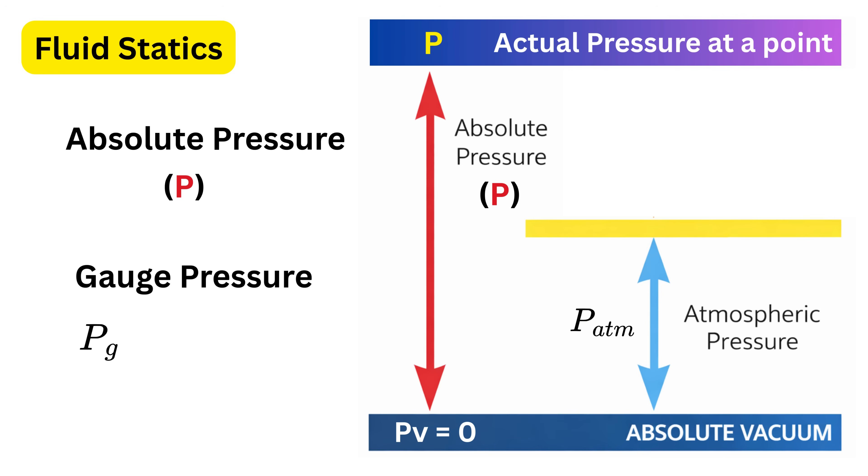The other type of pressure is gauge pressure. Gauge pressure is the pressure measured relative to atmospheric pressure. So if the absolute pressure at this point is p, then the gauge pressure at that point is p minus p atmospheric.